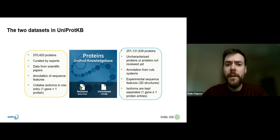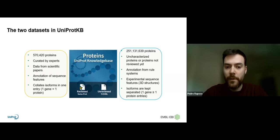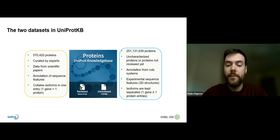The UniProtKB is composed of two different datasets: Swiss-Prot and TrEMBL. Swiss-Prot contains records that have been reviewed, which means that a curator has read through the literature with experimental data to characterize these proteins and add the information into the entry. We can identify these entries by the golden star icon. At the moment, Swiss-Prot has over half a million records. TrEMBL contains records that are not reviewed, and at the moment we have 250 million records, identified by the gray icon.